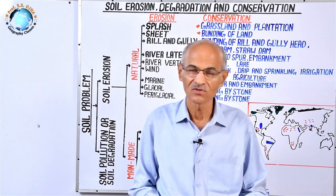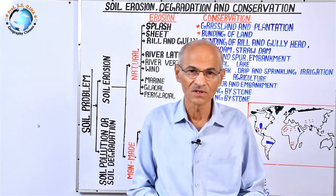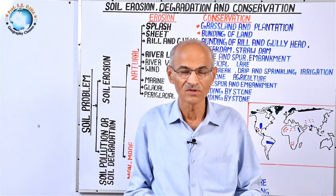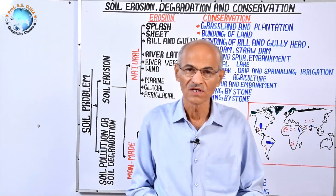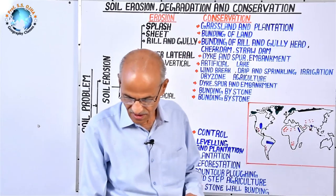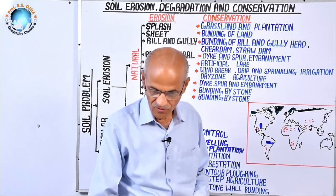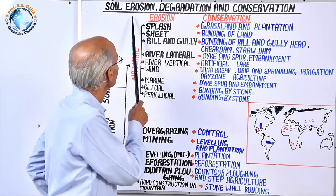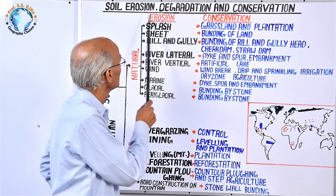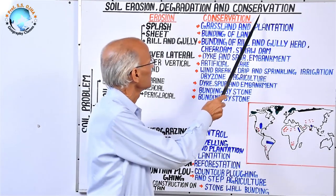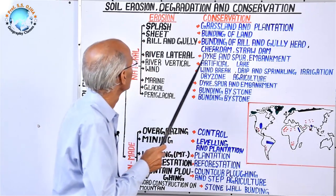The main problem is soil erosion, and the second problem is soil pollution in situ. So in this chapter we have to focus on soil erosion, soil degradation, and soil conservation.